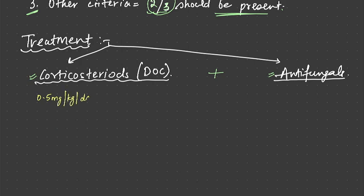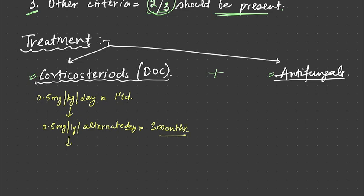Then we lower the dose by 0.5 mg per kg every alternate day. Then we continue this for three months. Then we reduce the dose further and taper down completely by three months.